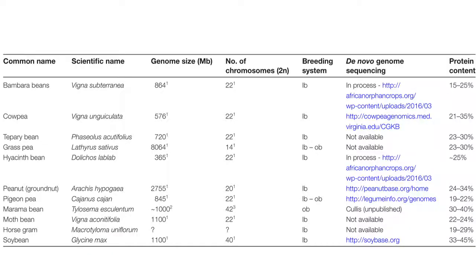Among different dicots, Bambara groundnut (Vigna subterranea) has 22 chromosome numbers and a genomic size of 846–864 Mb. Cowpea (Vigna unguiculata) has 22 chromosome numbers with a 576 Mb genome size. Grass pea (Lathyrus sativus) has 14 chromosome numbers and around 8 Gb genome. Hyacinth bean (Dolichos lablab) has 22 chromosome numbers and a genome size of 365 Mb.